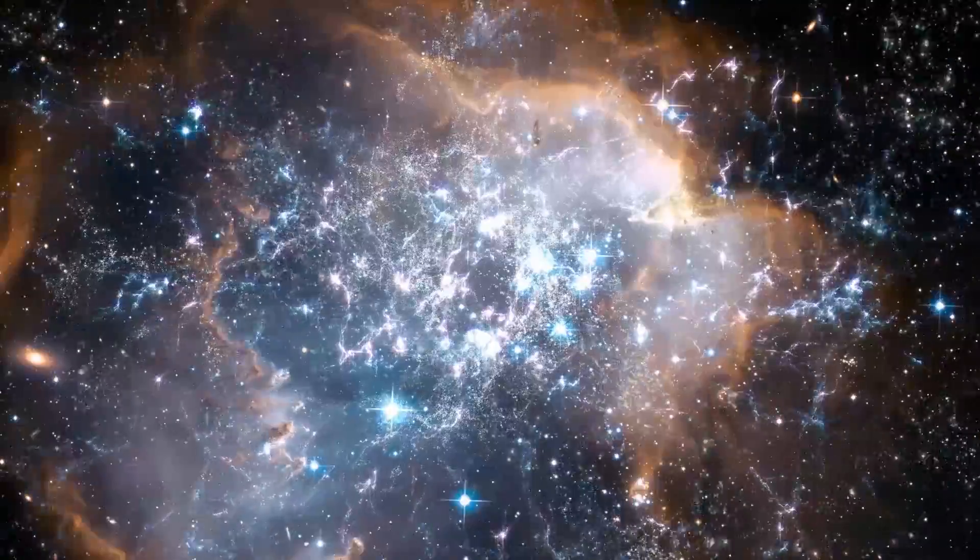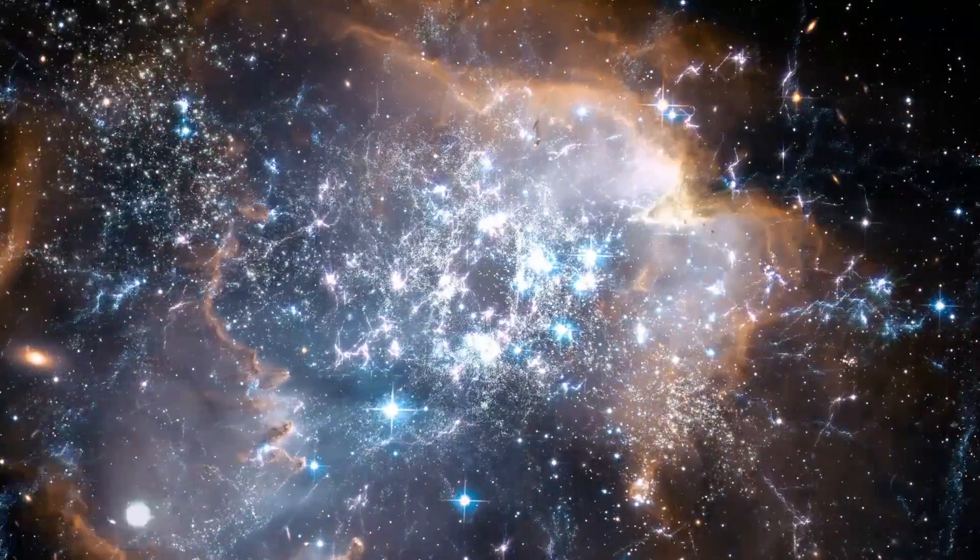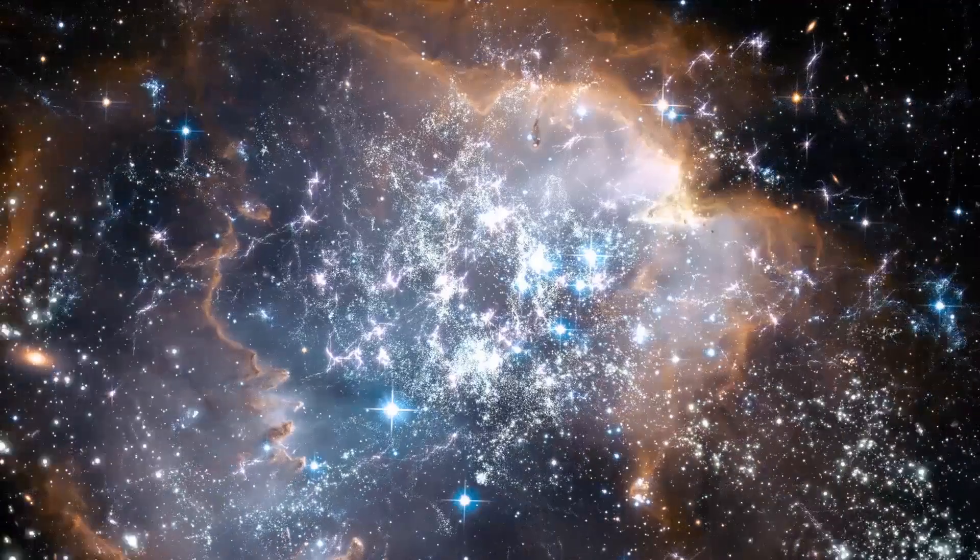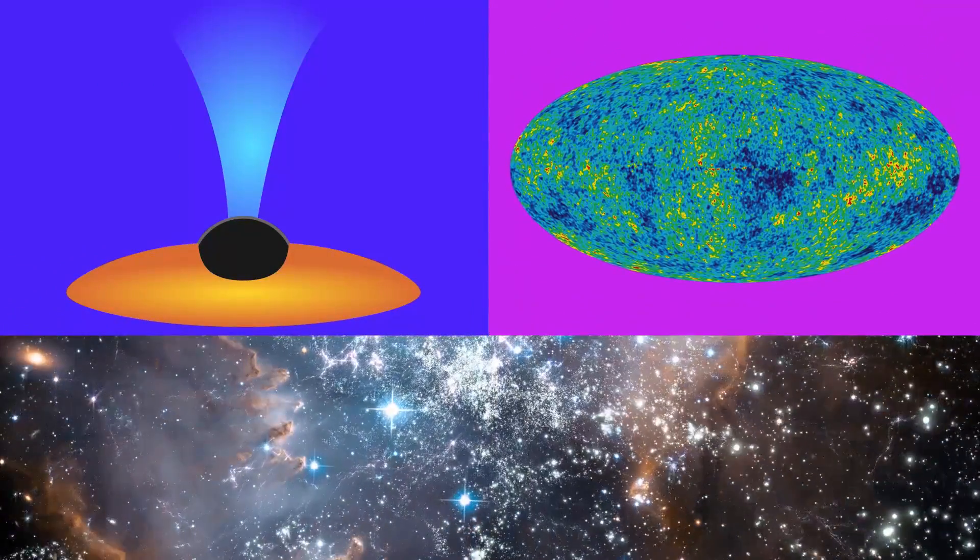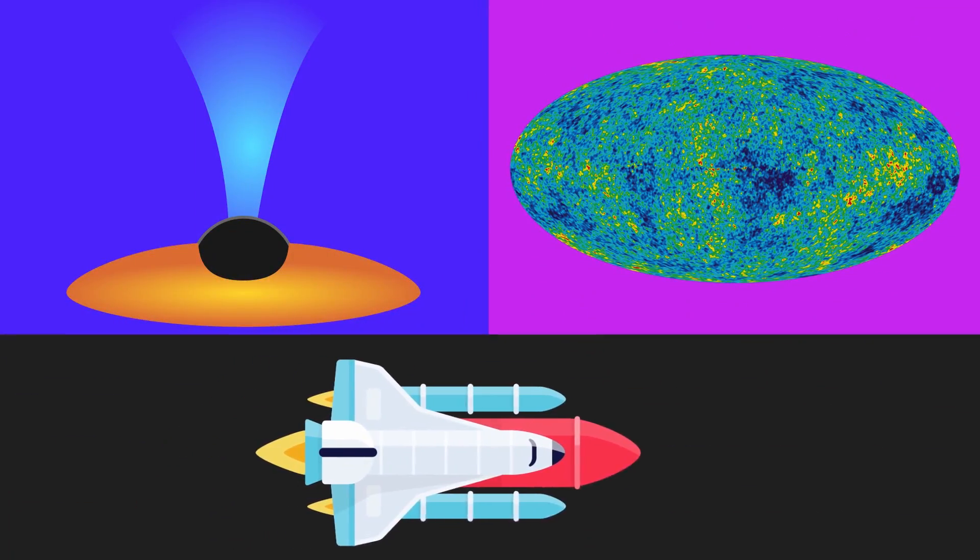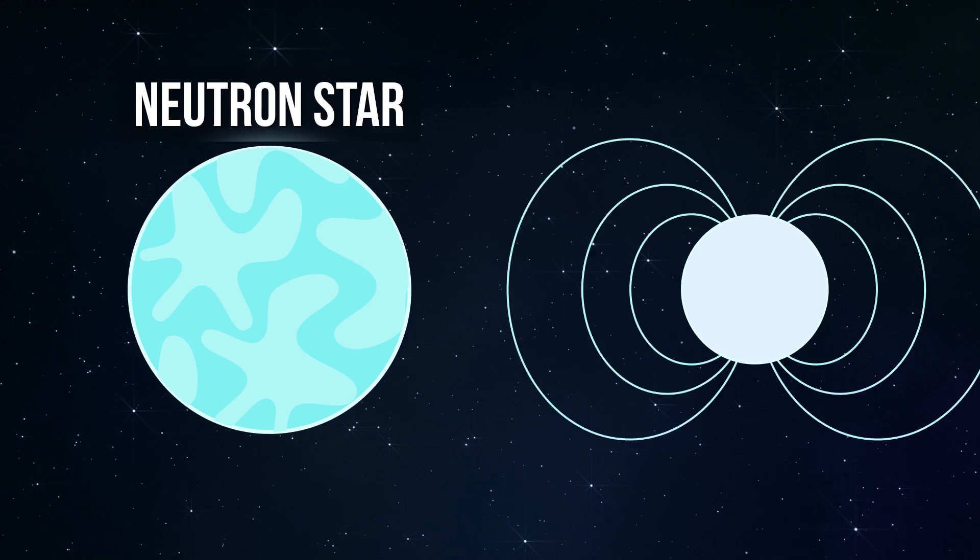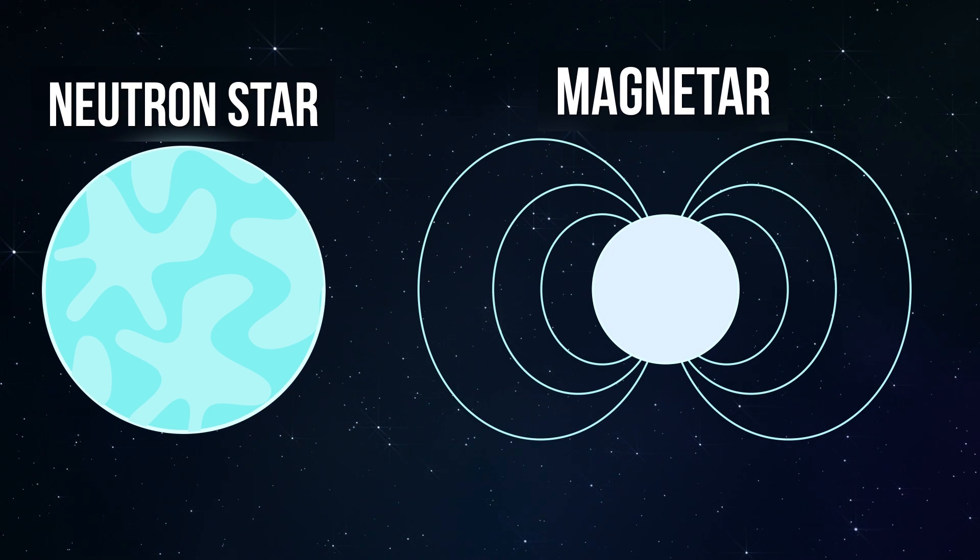The universe is full of weird, scary, awesome, and interesting things. I've made several videos already on topics like black holes, the size of the universe, and interstellar travel, which you can watch later. But neutron stars and their even weirder twins called magnetars are possibly even weirder, scarier, and more interesting than anything else that I've discussed so far.